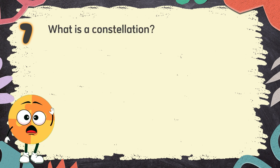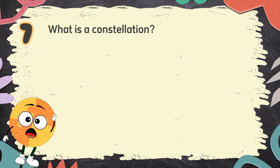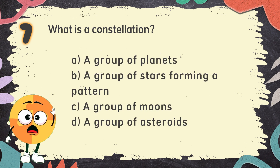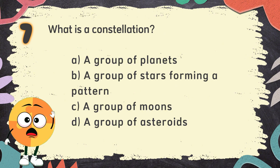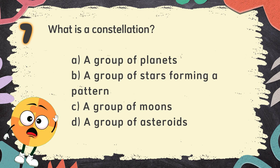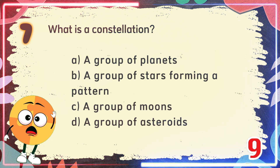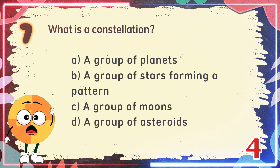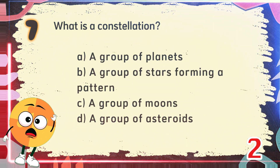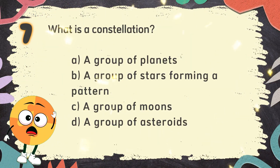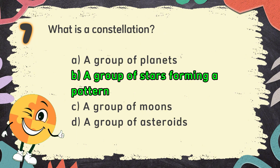Number 7. What is a constellation? The choices are: A. A group of planets. B. A group of stars forming a pattern. C. A group of moons. D. A group of asteroids. The correct answer is B: a group of stars forming a pattern.